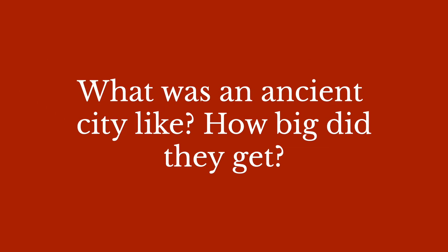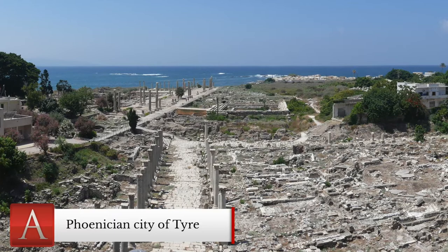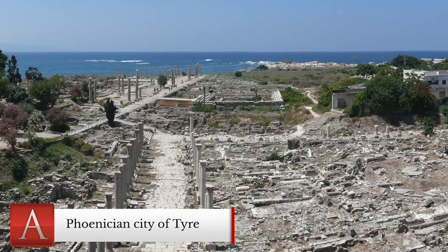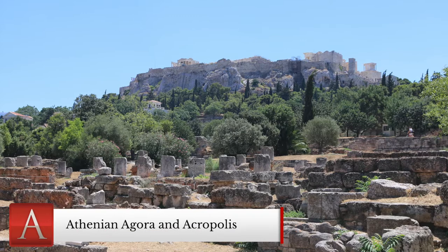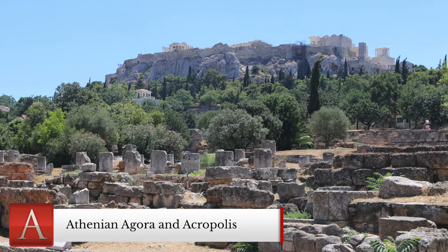What was an ancient city like? How big did they get? Most ancient cities were really small by modern standards. The ones in the ancient Mediterranean were particularly small — maybe three, four, five thousand people in each one. We would barely count them as villages in most of the developed world. But every so often, a few enormous ones appeared.